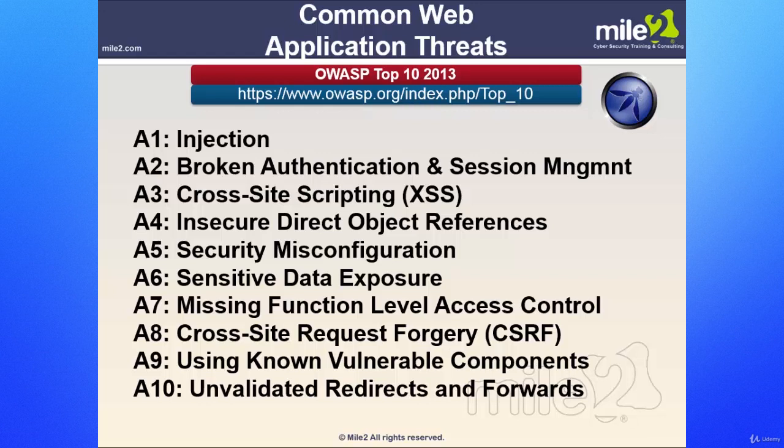We also have insecure direct object references. This occurs when the developer exposes a reference to an internal implementation object, such as a file, a directory, or even a database key. Without an access control check or other protection, attackers can manipulate these references to access unauthorized data.